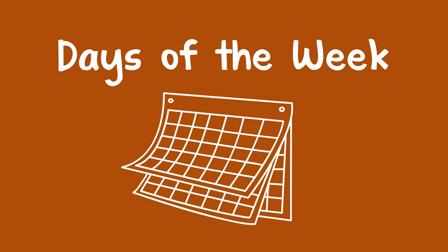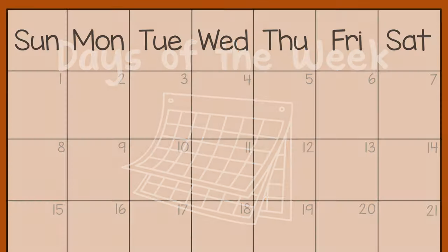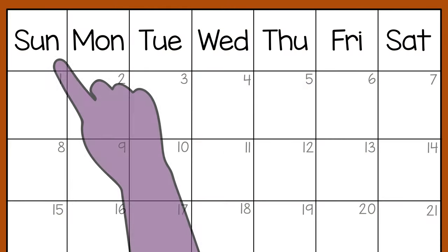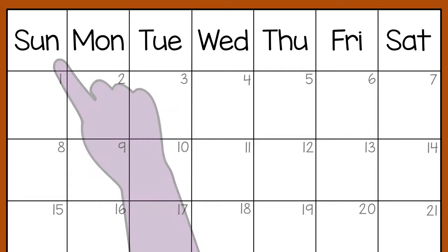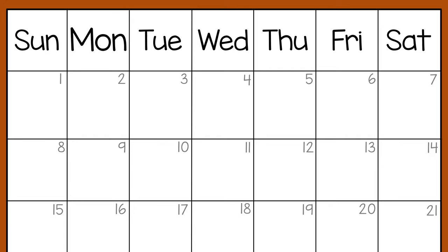You can help a child learn about the days of the week by using a calendar. You can point out the days on the calendar and say, these are the days of the week: Sunday, Monday, Tuesday, Wednesday, Thursday, Friday, Saturday.